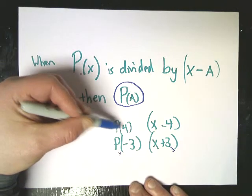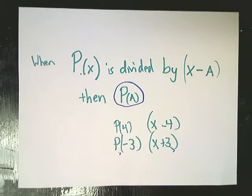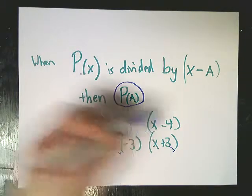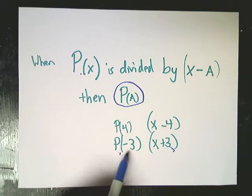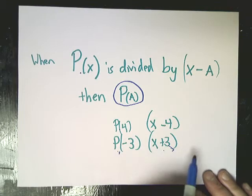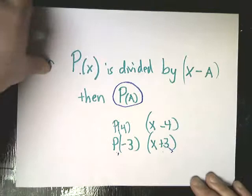If they say, what's P of four, they want to know what the remainder is when you divide by x minus four. If they ask for P of negative three, they want to know what's the remainder when you divide by x plus three. So there's a little bit of a changeover. It's not like it's complicated. It's just one of those things. Let's just do one and move on.